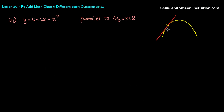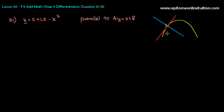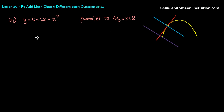Let's say there is a tangent to this particular point, and you need to find the equation of the normal — the normal would be 90 degrees to the tangent. It says the normal is parallel to another line, 4y equals to x plus 8. So there is another line that the normal is parallel to. I just want you to have an idea, to be able to visualize or picture out what the diagram would look like.